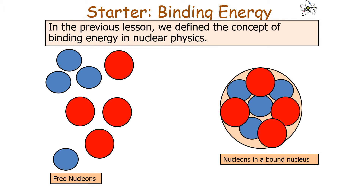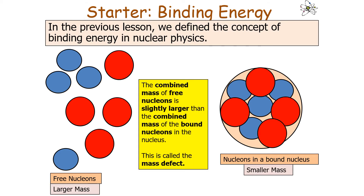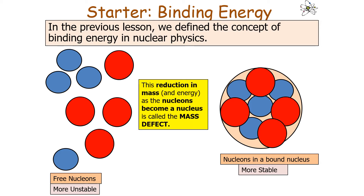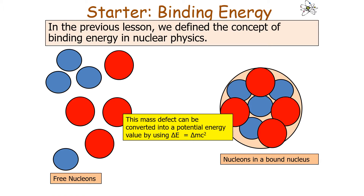In a previous lesson we defined the concept of binding energy in nuclear physics. The combined mass of free nucleons is slightly larger than the combined mass of bound nucleons in a nucleus. We call this mass difference the mass deficit or mass defect. This occurs because the nucleons are more stable in a nucleus, containing less potential energy due to the strong interaction attracting those particles together. This reduction in mass and energy as nucleons form a nucleus is called the mass defect, and can be converted into a potential energy value using delta E equals delta m c squared.